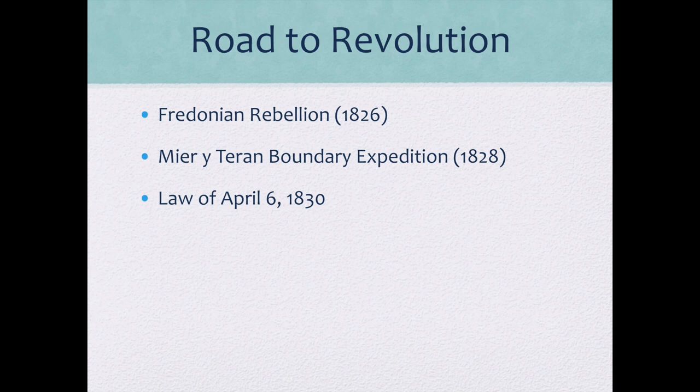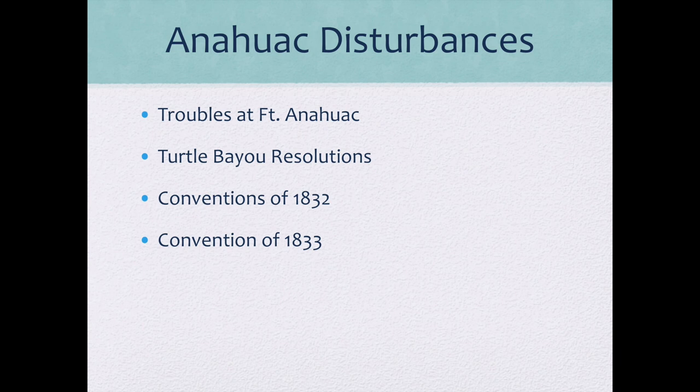Mier y Terán passed through Texas, saw various Anglo settlements, and reported back that the settlers did not seem to be becoming Catholic or true Mexican citizens — they weren't learning Spanish either. So on April 6th of 1830, the Mexican government passed the Bustamante Decree, which began restricting further immigration from the United States. This led to a series of disturbances by recent immigrants who were upset at these and other regulations coming from Mexico.